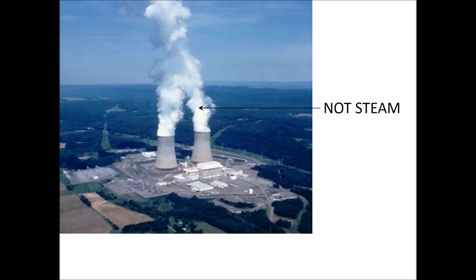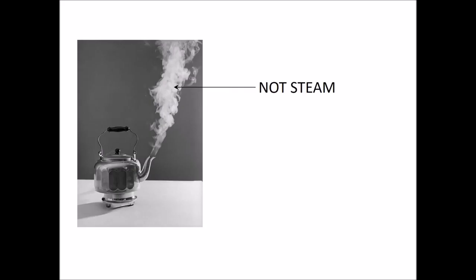For the same reason, the steam we were seeing in the video earlier wasn't steam either — it was partially condensed water vapor. What you're looking at there is a power station that runs on a supercritical Rankine cycle; it generates energy from steam, but the plumes that come out of those cooling towers are not steam — they are something else.